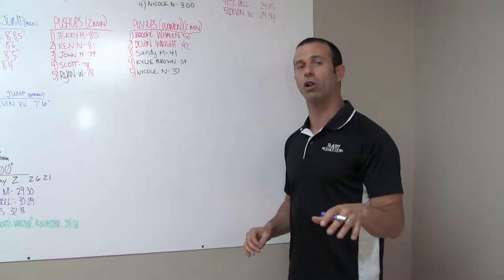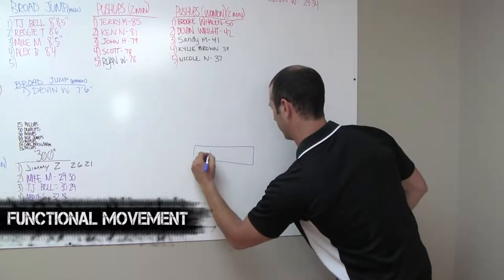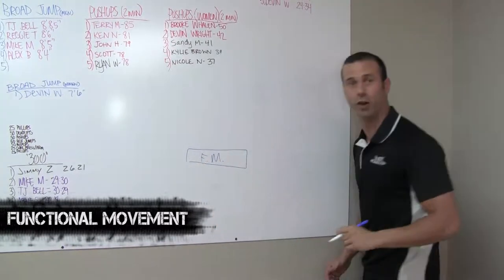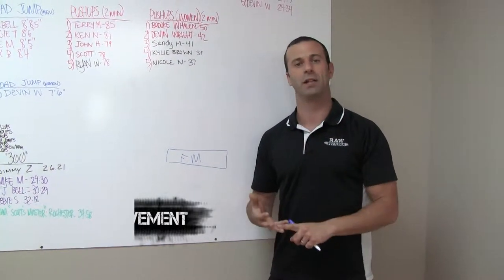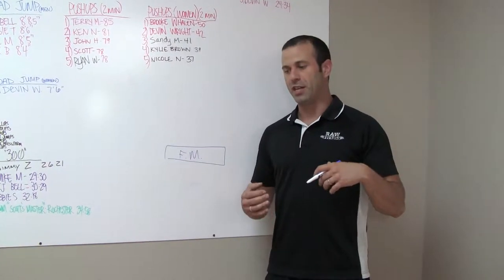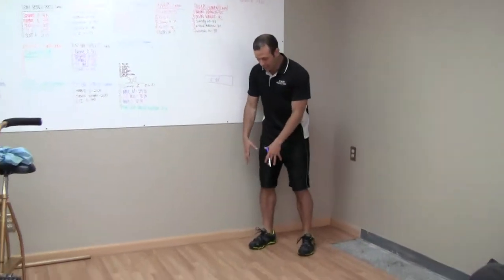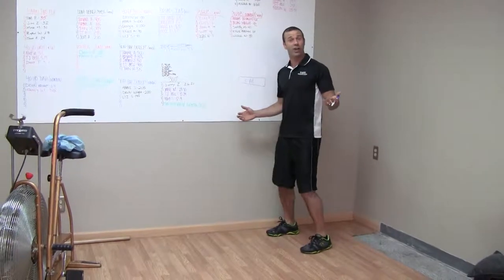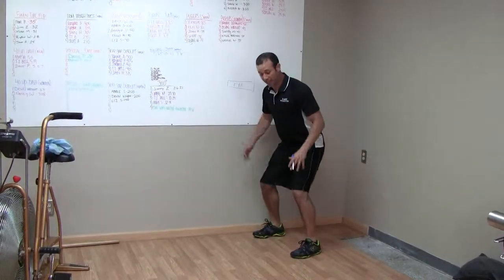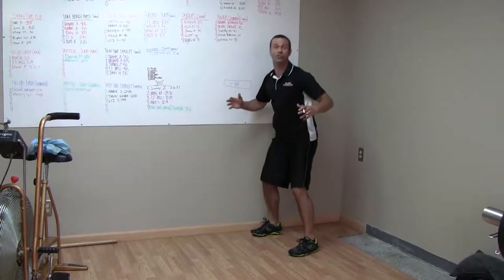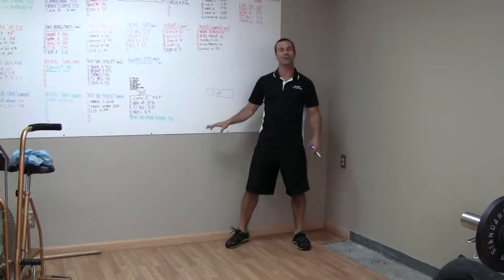The bottom layer of the pyramid is what we call functional movement, which is made up of two things: mobility and stability. Mobility is simply the athlete's ability to go through a certain range of motion. For example, if an athlete lacks proper ankle mobility when they squat, we will see the heels come up or they shoot the butt way back and fall forward instead of performing a proper squat.